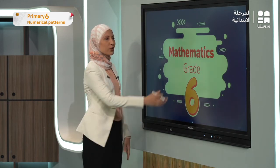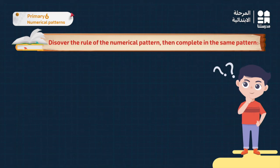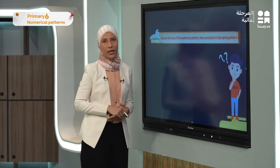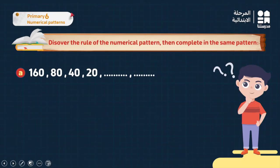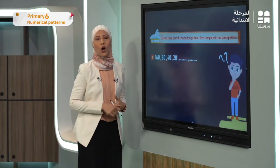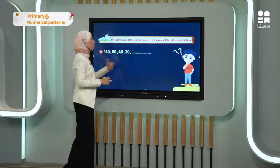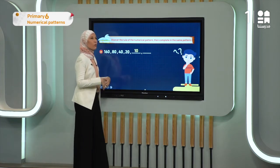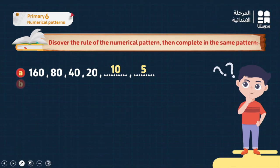Let's look at the first exercise on the pattern. We discover the rule of the numerical pattern and then complete it. First: 160, 80, 40, 20. If you concentrate, 80 is the half of 160, 40 is the half of 80, and 20 is the half of 40. So every time we're dividing by 2 or finding the half. Half of 20 is 10, and half of 10 is 5.